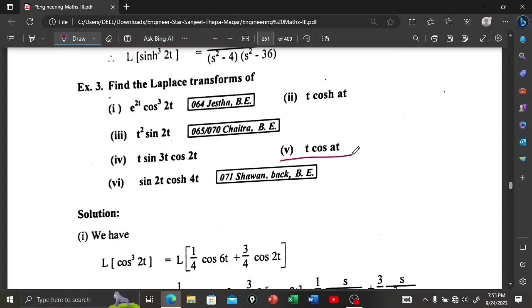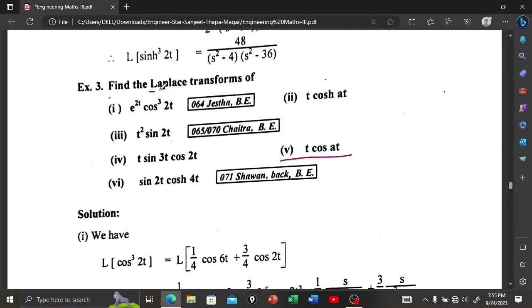And now the fifth question is: find the Laplace transform of t cos(at). First of all, we need to find the Laplace transform of cos(at).